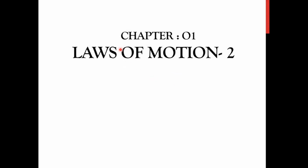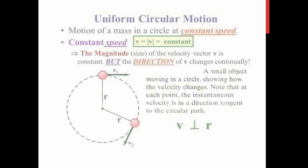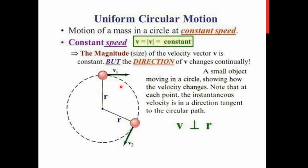Hello, dear students, welcome back to the KCYC channel. Today we are going to continue the lecture from last time: Chapter 1, Laws of Motion, Part 2. The next part is uniform circular motion — it is a motion performed by a body in a circular path with constant speed. It is very important to understand that constant speed must be maintained.